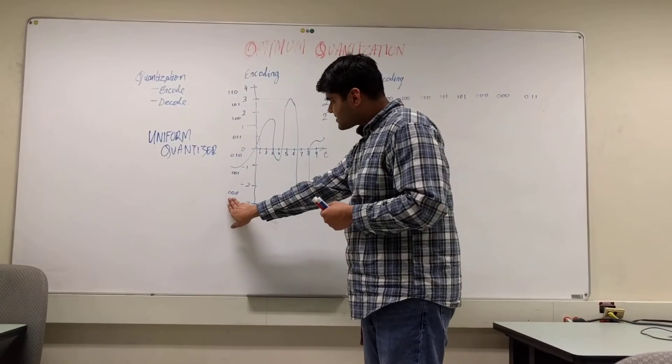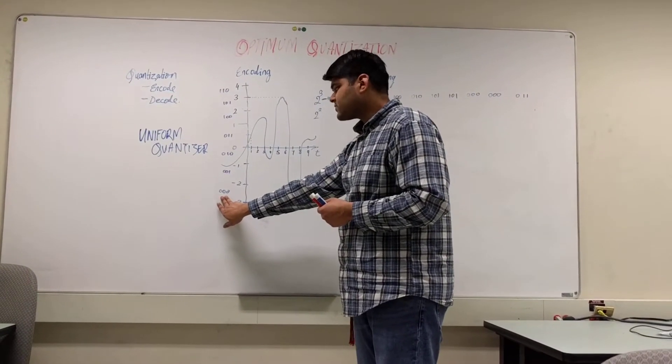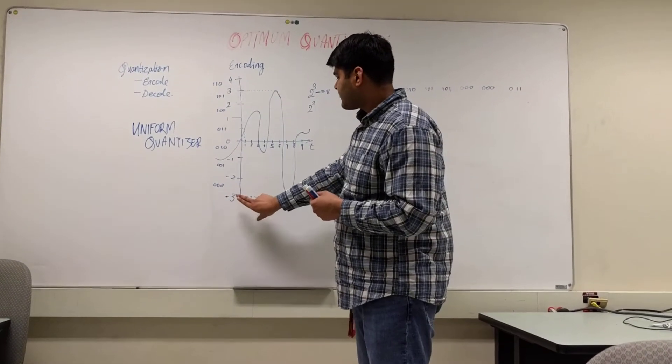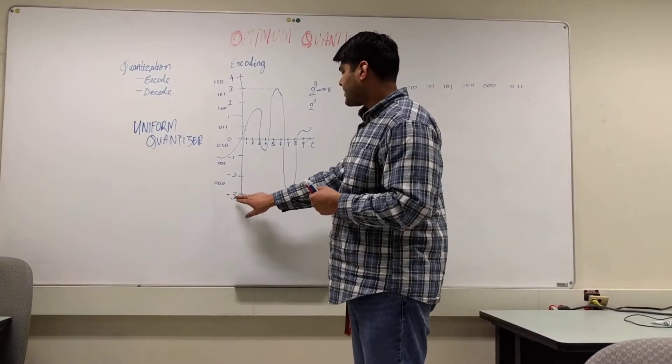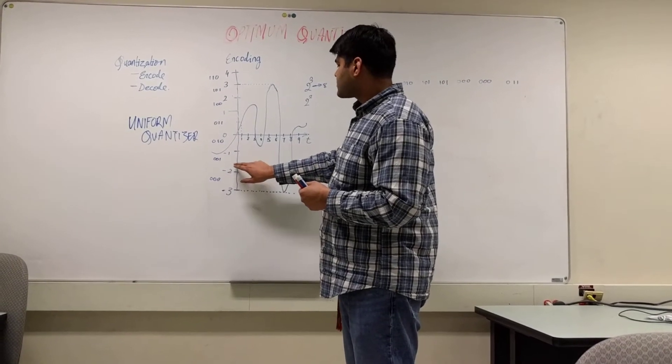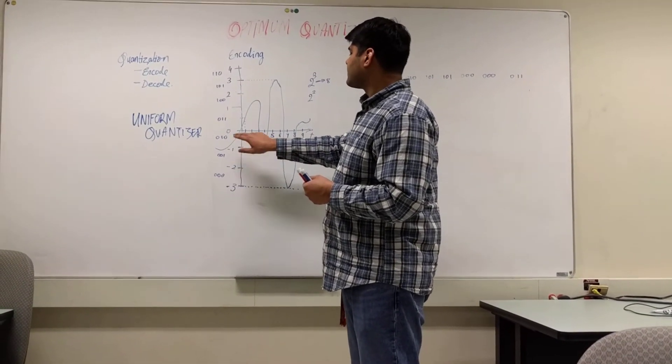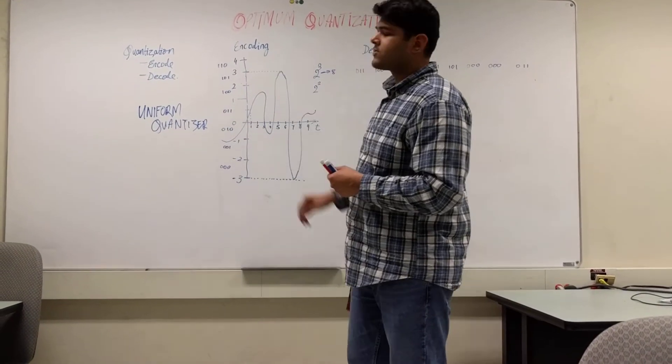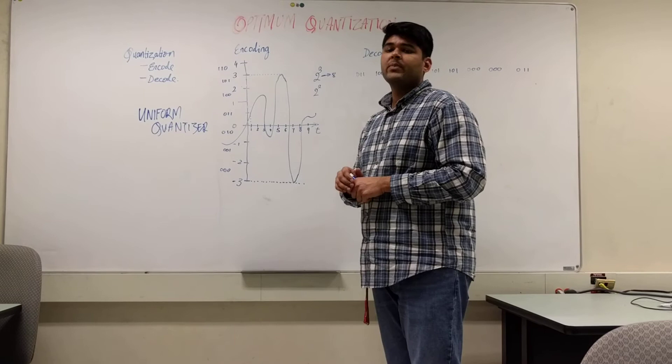So, we have given these specific values using 3 bits. 0, 0, 0 for the value of the signal between minus 3 to minus 2. Between minus 2 to minus 1, 0, 0, 1. Minus 1 to 0, it would be 0, 1, 0. And so on and so forth, as you can see in this graph.